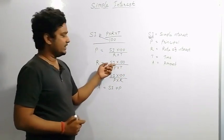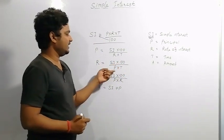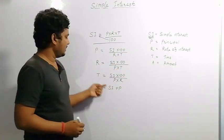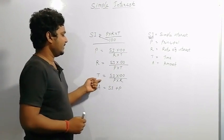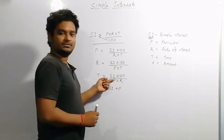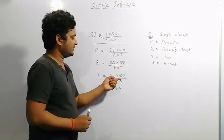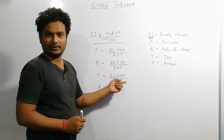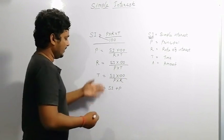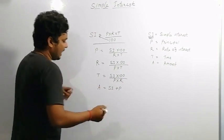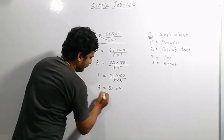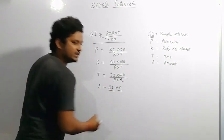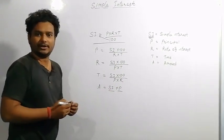Rate equals simple interest into 100 divided by principal into time. Time equals simple interest into 100 divided by principal into rate. When finding amount, the amount is the sum of simple interest and the principal.